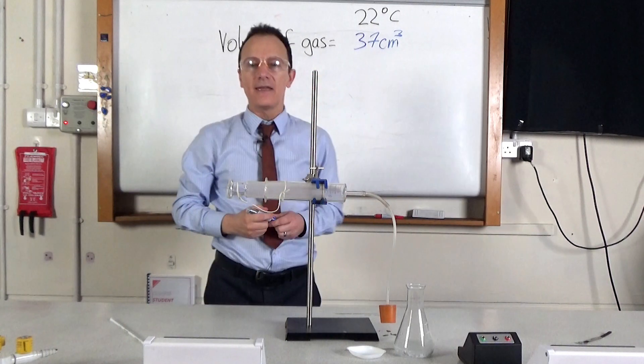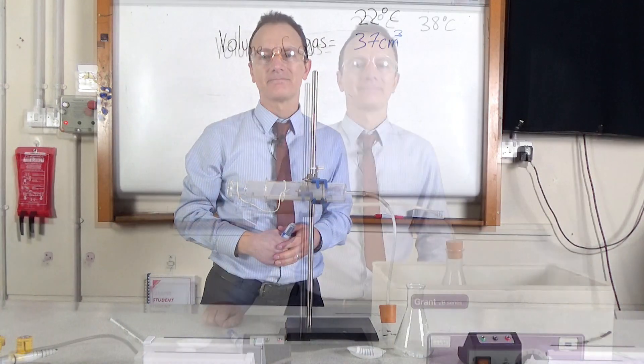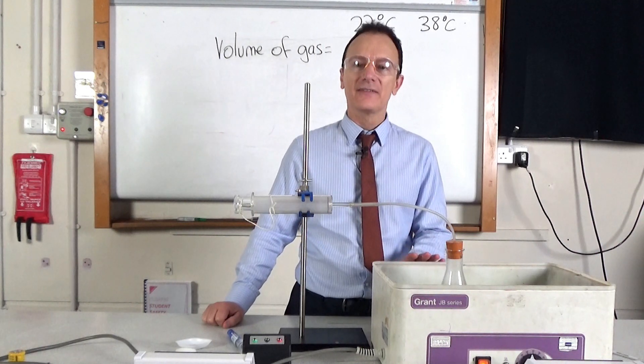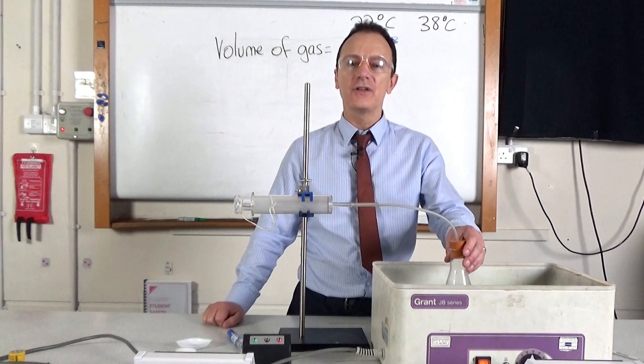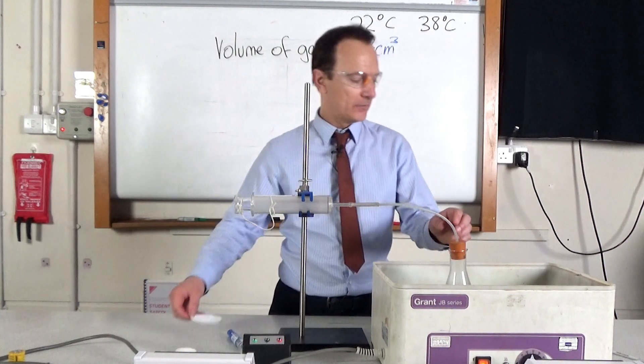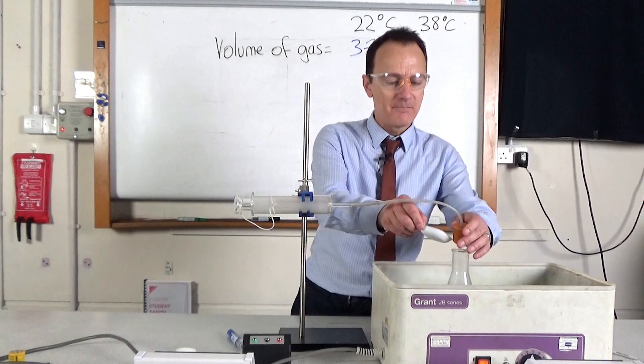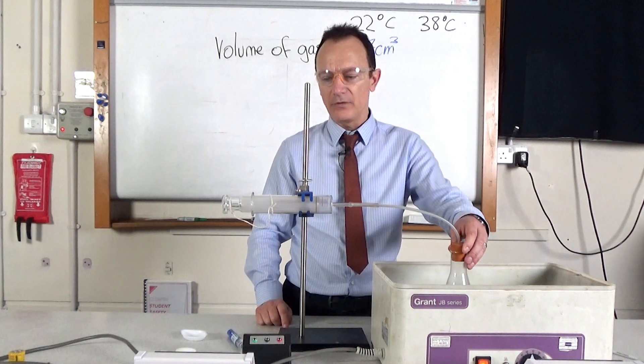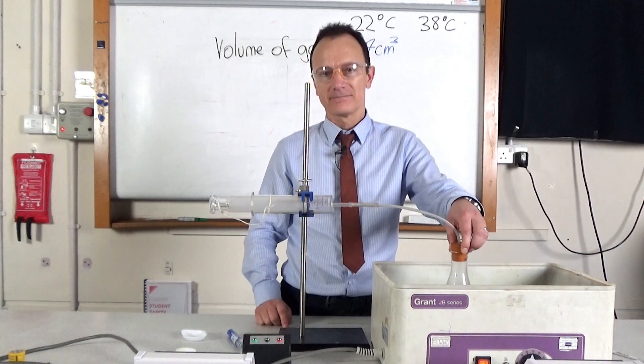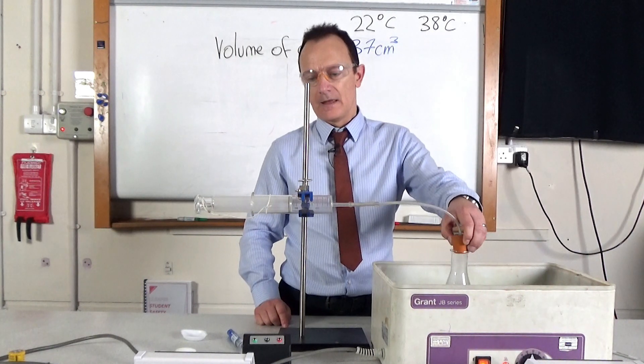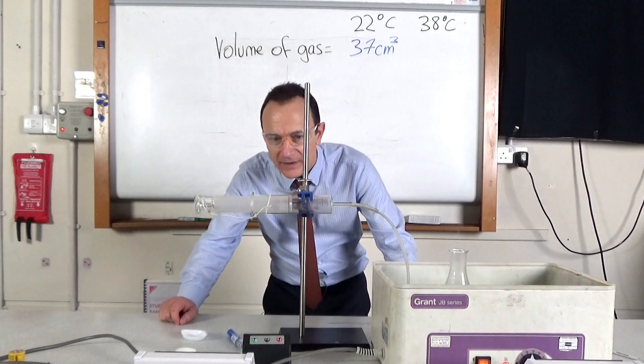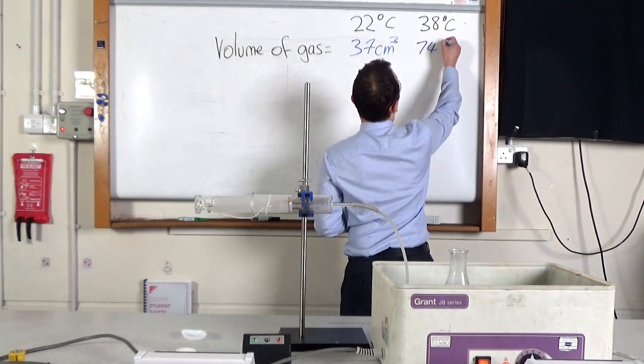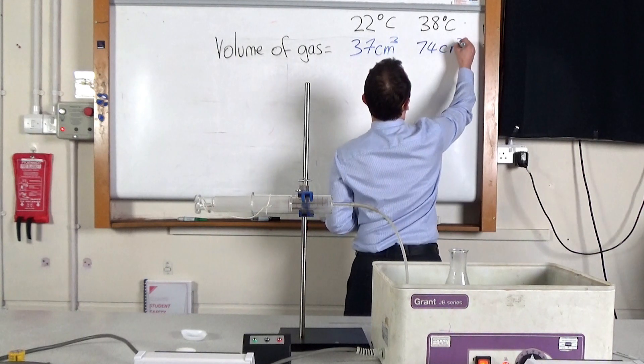I'm now going to repeat it, but add the acid at a higher temperature. I'm going to repeat the reaction, but this time the acid has been in this electric water bath, so it's been heating up to 38 degrees C. So once again, I'm going to add the same mass of magnesium to the acid, start the stopwatch and see how much gas is made in the first 10 seconds. And I can now see that in the first 10 seconds, it's made 74 centimeters cubed of gas.